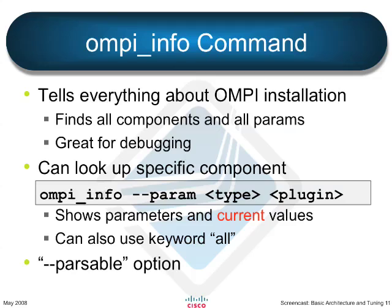You can look up the parameters for a specific component. If you do ompi-info --param with a type and a plug-in, it'll show you the framework name and component name parameters and their current values. So if you set an environment variable or a file value, ompi-info will show it. You can also use the keyword 'all' for either type or plug-in — so --param all all will show all parameters throughout the entire OpenMPI system. There's also a --parsable option that makes it machine-readable for commands like sed, awk, and grep — quite handy for scripts.